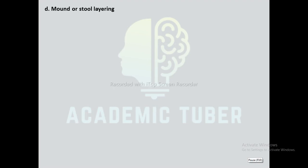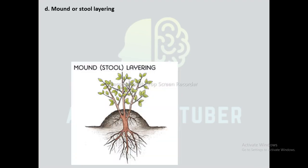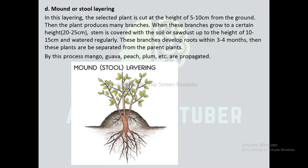Next is mold or stool layering. It is used to produce new plants from plants with heavy stems, such as branched stocks and root stalks of tree fruits. In this layering, the selected plant is cut at a height of 5 to 10 cm from the ground, and the plant produces many branches. When these branches grow to a certain height — about 20 to 25 cm — the stem is covered with soil or sawdust up to a height of 10 to 15 cm and watered regularly. These branches develop roots within 3 to 4 months and are then separated from the parent plant. By this process, mango, guava, peach, plum, etc. can be propagated.